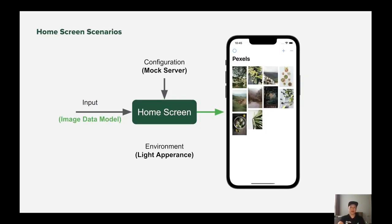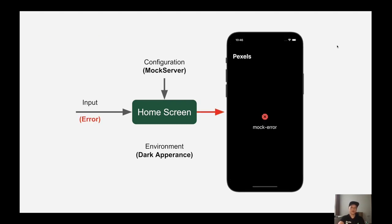Here is a simple scenario for our home screen feature. The home screen will display a list of photos from a remote source in a good layout. The current scenario shows the home screen in the happy case, which guarantees a response from a mock server, and the device runs with light mode user interface. We have another scenario for the same component showing the UI in error case with the device running on a dark user interface.